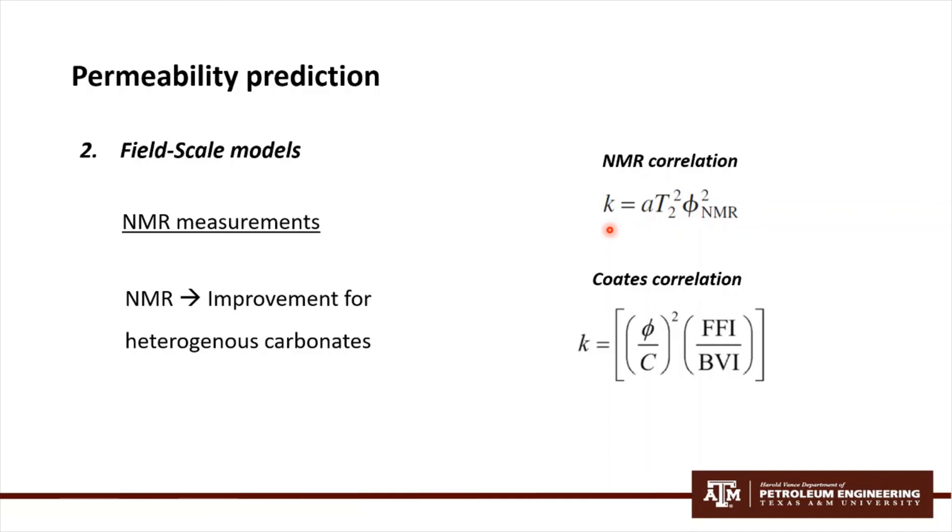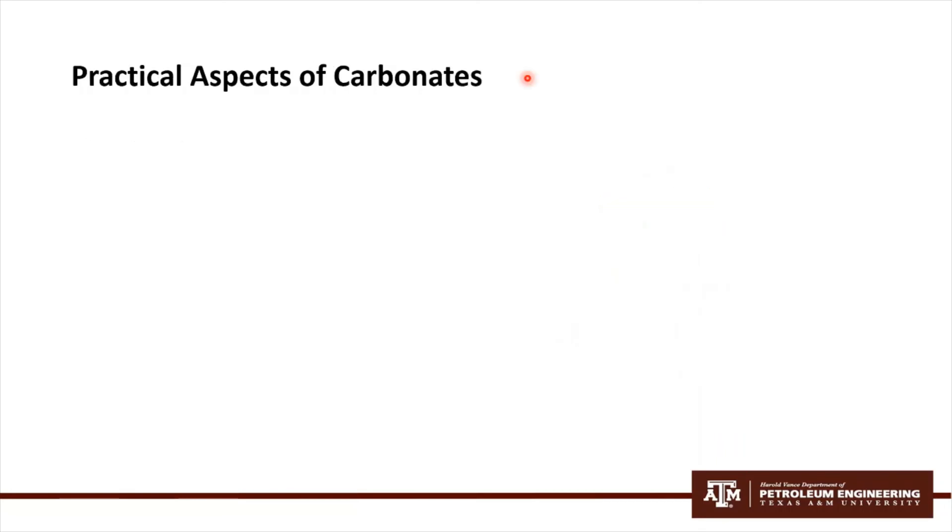Basically, this is the permeability estimation using NMR measurements. Later, Coates proposed an improvement of it, and this is known as the Coates pond water permeability model you can see here.